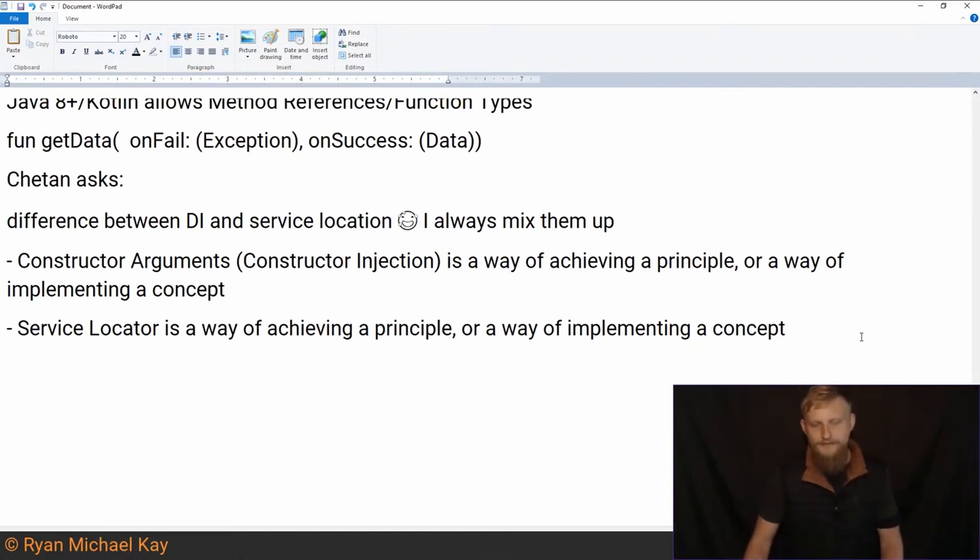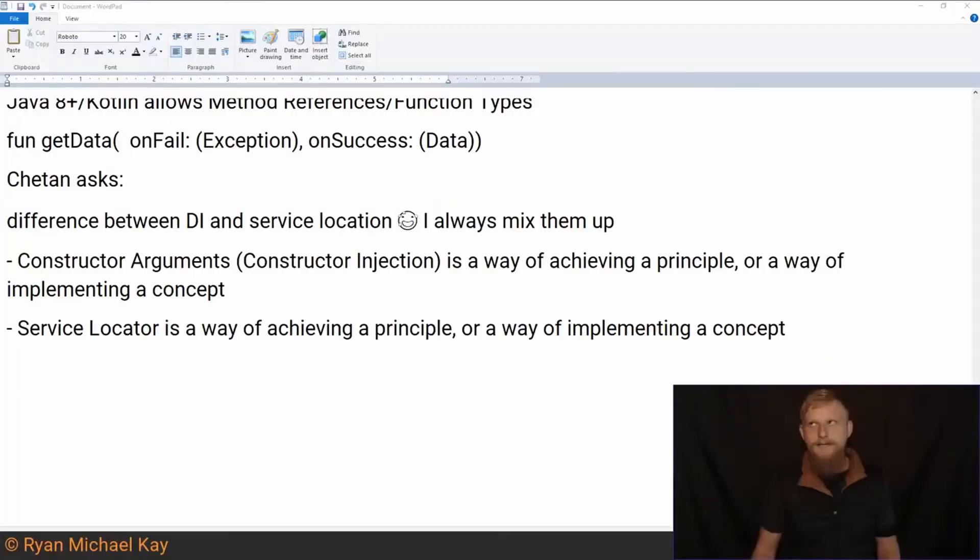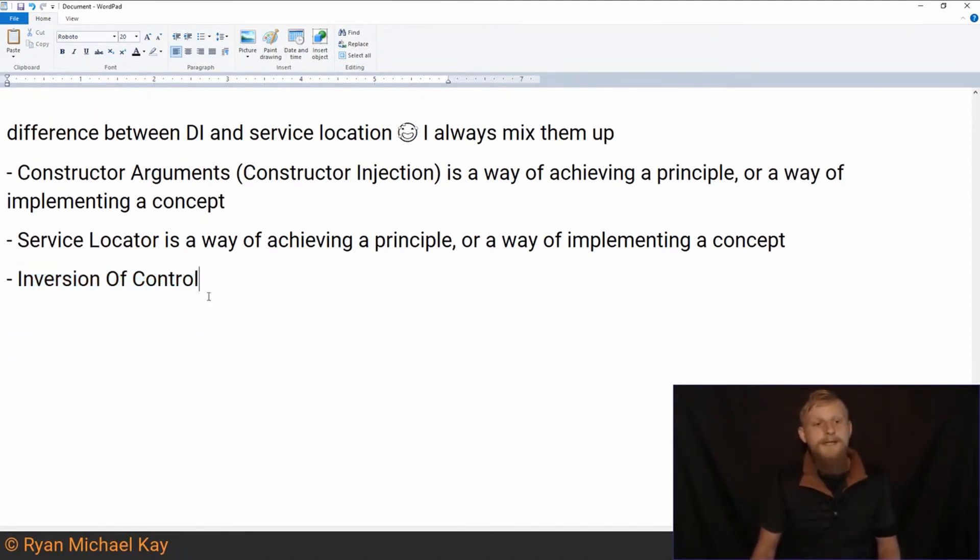So what is missing from most people's understanding about dependency injection and service location is the root principle. Now this root principle has a stupid name. I believe it's called inversion of control. So constructor injection or field injection or a service locator, these are all ways of applying this principle of inversion of control. This is a stupid name. It doesn't tell you anything about what's going on.